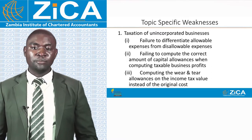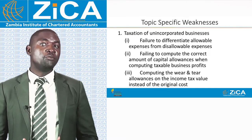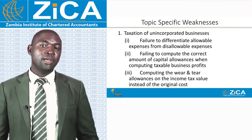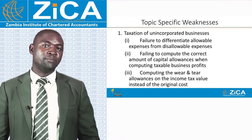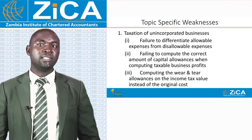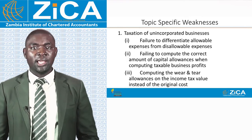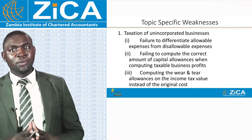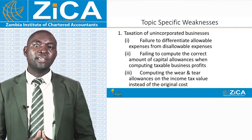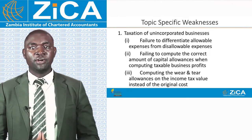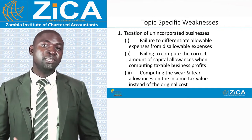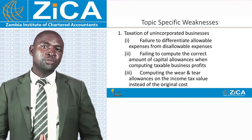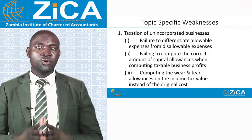Candidates also fail to compute the correct amount of capital allowances when computing taxable business profits, often because they use wrong wear and tear rates. For example, a motor van attracts wear and tear at 25%, but candidates typically use 20%. Another weakness is computing wear and tear allowances on the income tax value instead of the original cost. The principle is that capital allowances are calculated on cost, not on income tax values. If the question provides income tax values for implements, plant, machinery, and buildings, the original cost of those assets will also be given, and capital allowances must be calculated on the original costs.